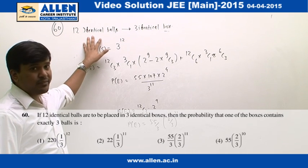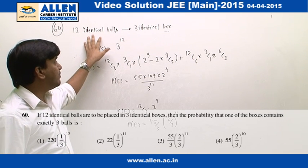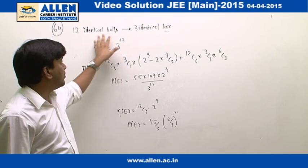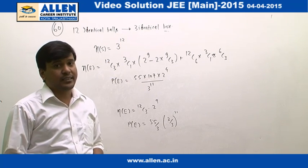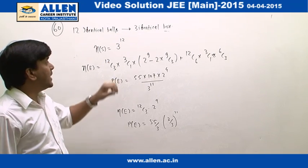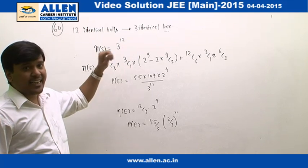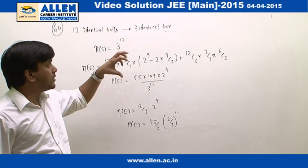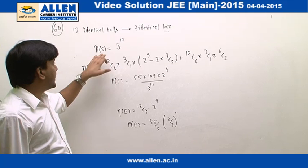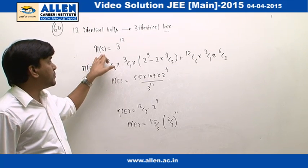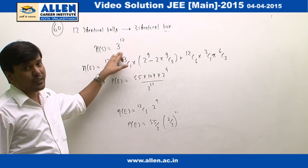In question number 60, it is given there are 12 identical balls and we have to place these 12 identical balls into 3 identical boxes such that one of the boxes contains exactly 3 balls. We can see the number of elements in the sample space is going to be 3 raised to the power 12.